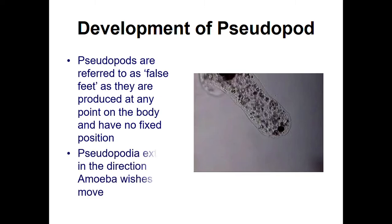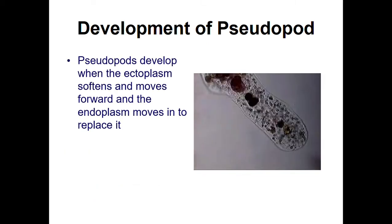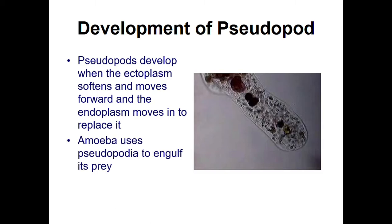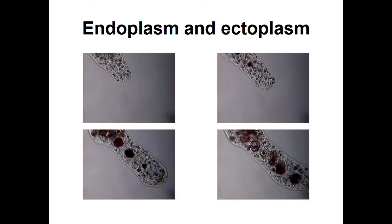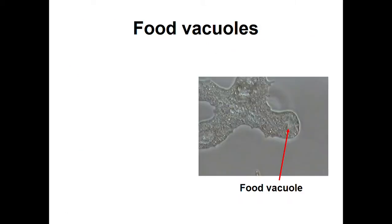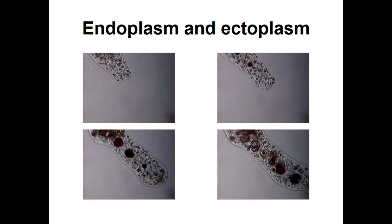Amoeba doesn't have any fixed place or size, and it can travel in any direction. The ectoplasm develops first, and then the endoplasm slowly flows into it. So you can see the ectoplasm getting developed and the endoplasm slowly coming in. This is basically how amoeba uses pseudopodia to capture prey.